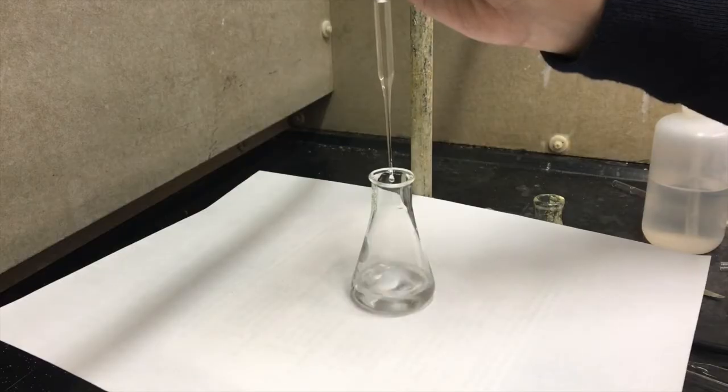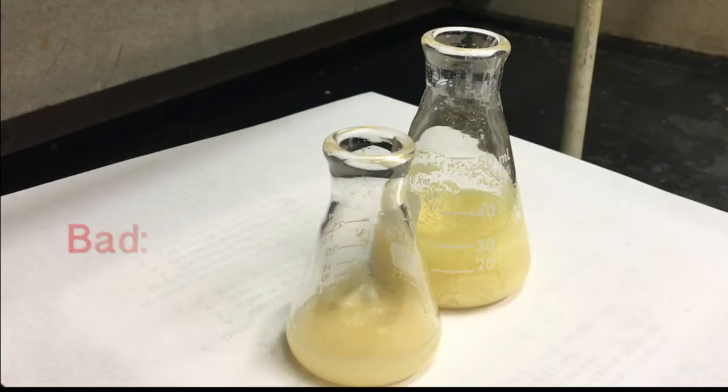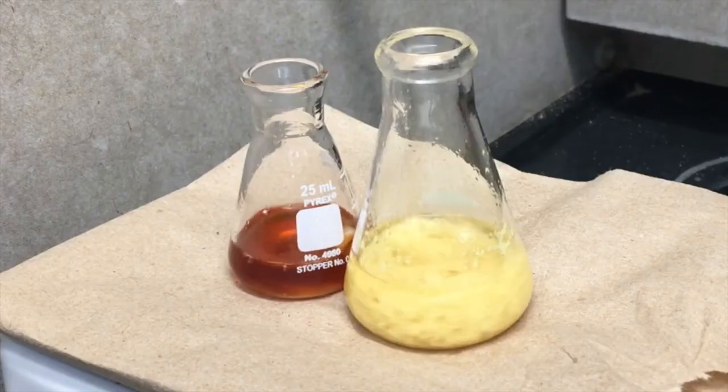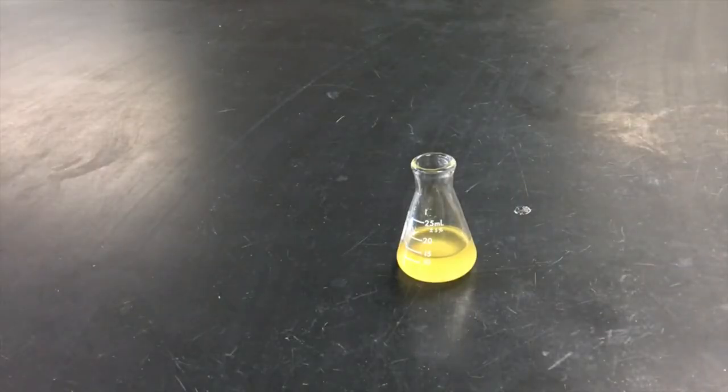Vortex again, once again combine the two dropwise while it's spinning as fast as it can. If it ends up looking a lot like product A, then you messed up and you need to start again. But if it's clear, and dark orange, or a little yellow, then that's fine.